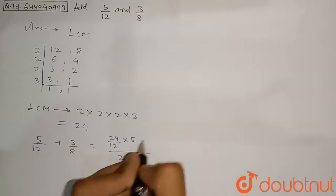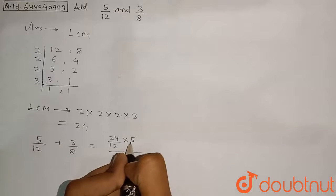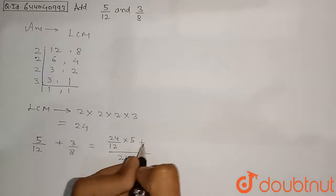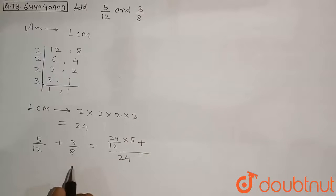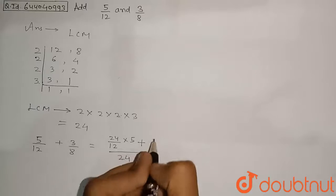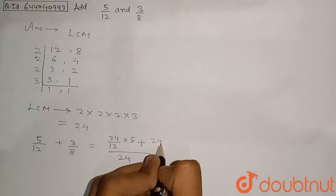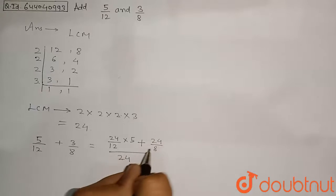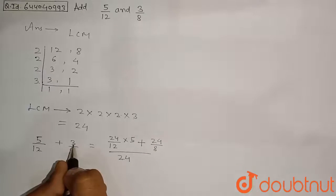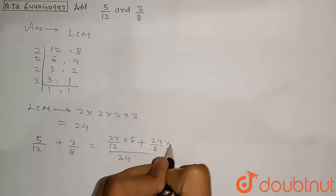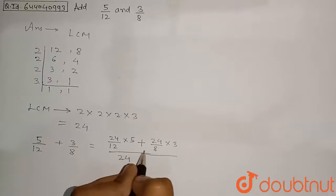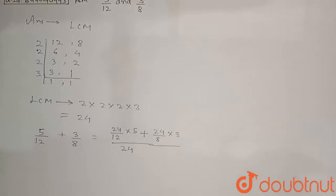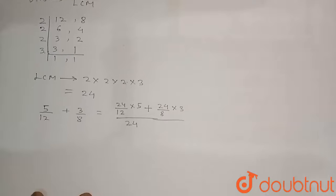We put a plus sign, then follow the same procedure for the second fraction: divide the LCM 24 by 8, and multiply that result by 3. Solving this expression will give us the addition of the two fractions.